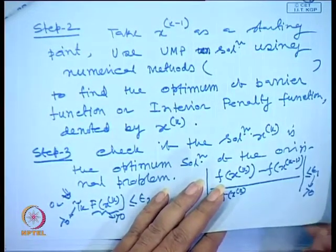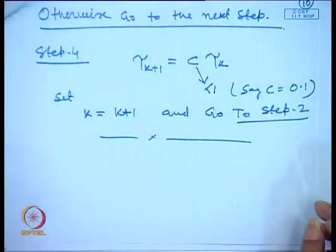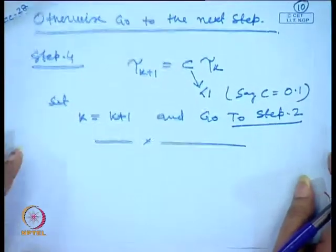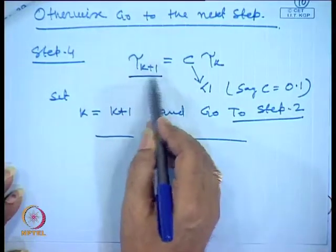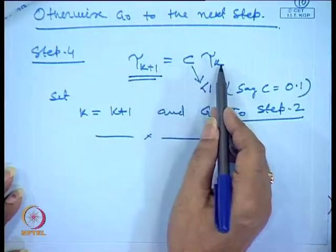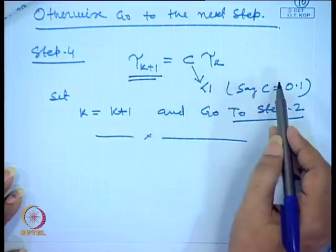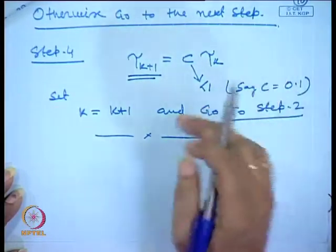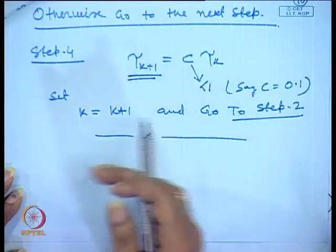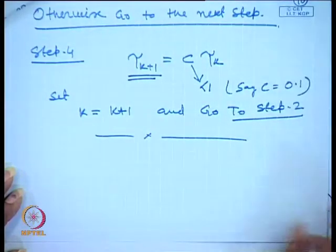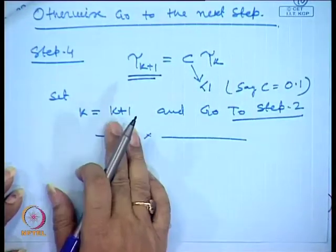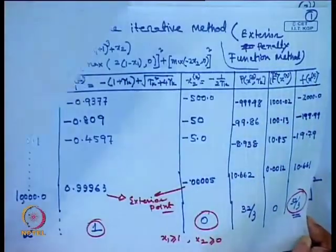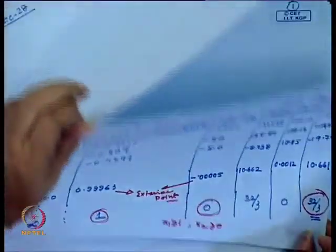That means the solution is approaching the boundary of the feasible region. If the condition is not satisfied, go to the next iteration by assigning tau_{k+1} = c * tau_k, where c < 1. By reducing the penalty coefficient, you approach the boundary of the feasible region. Then increment k to k+1 and go to step 2, repeating the process to obtain the optimal solution.